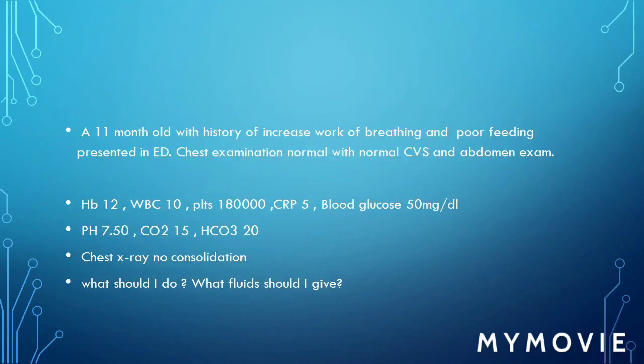Scenario two: an 11-month-old with a history of increased work of breathing and poor feeding presented in ED. Chest examination is normal. Glucose is 50, there is respiratory alkalosis. What should I do and what fluids should I give?